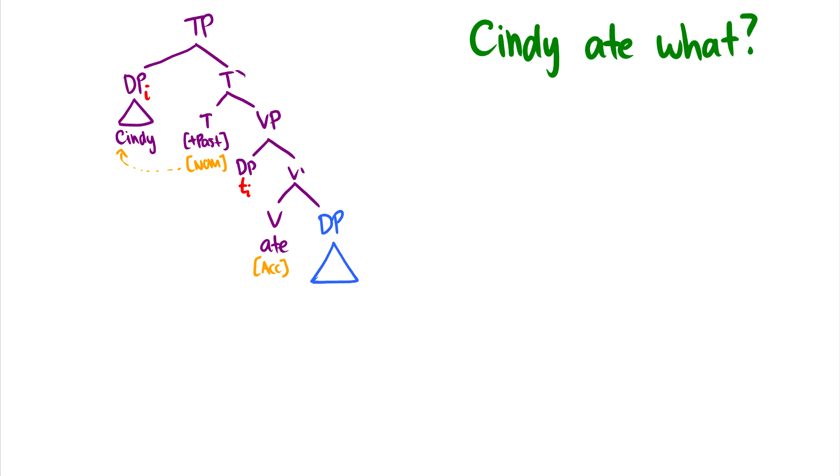Well, this is an echo question. So really what we do is we just replace whatever we're thinking, like Cindy ate the pie. We're just replacing this with the WH word what. And that's all we do. And then what gets accusative case from the verb. So echo questions are very simple in that they just take up the position of the DP and there's no movement involved at all.